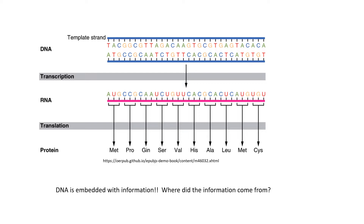The DNA is embedded with information. It carries the information that ultimately gets transcribed and then translated into the correct amino acid ordering to make the proteins that the body needs. The question is: where did this information come from? How did the DNA code — which is essentially universal and essentially as old as life itself — how was DNA born with this information? That is the information enigma we will explore in these lectures.